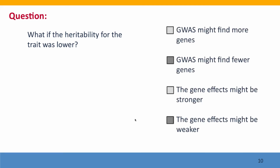If heritability had been lower, the genome-wide association study is likely to have found fewer genes, and the effects that it found are likely to be weaker. That's because the genetic causes of the differences between our two populations have been diluted by environmental effects and chance effects that have also contributed to the phenotypic differences we're studying.